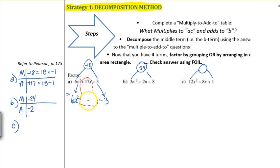Only one combination is going to work and it has everything to do with the multiply-to-adds-to table. So we have plus 18x minus 1x, or just minus x. Take a look at what you have here - we have a four term expression now.